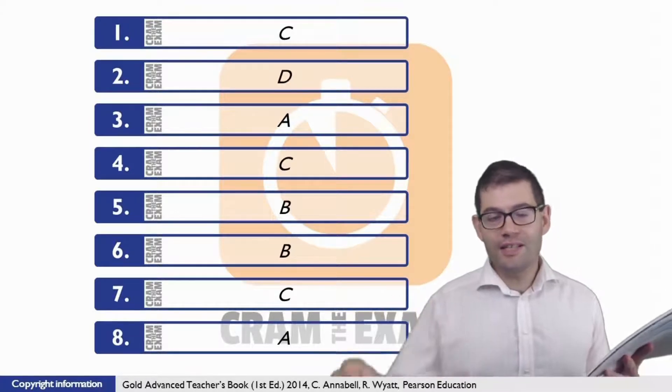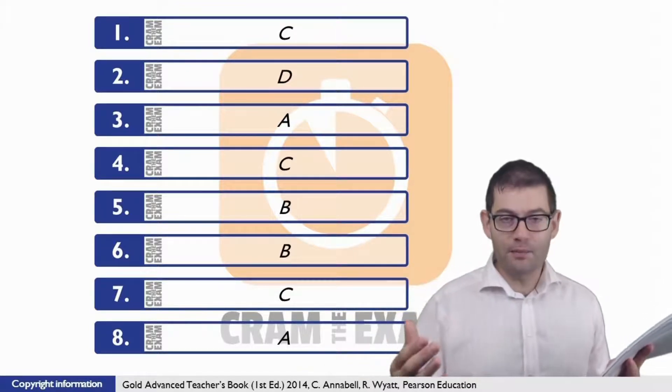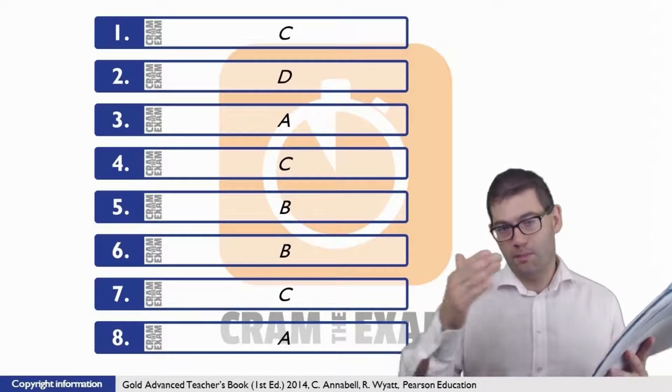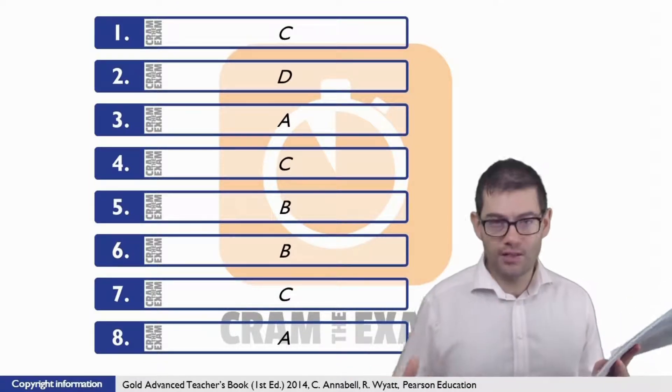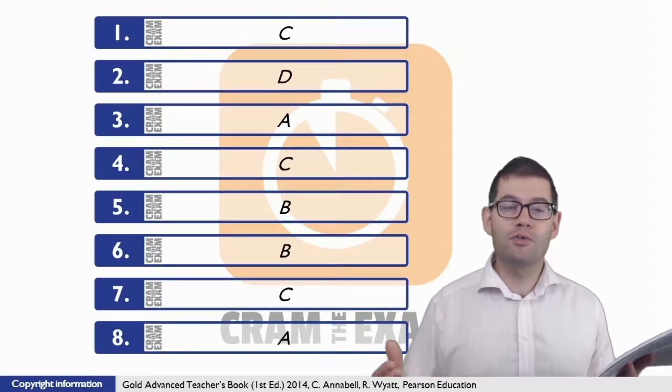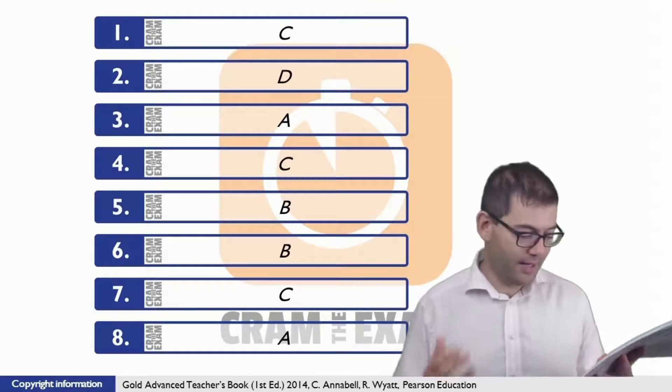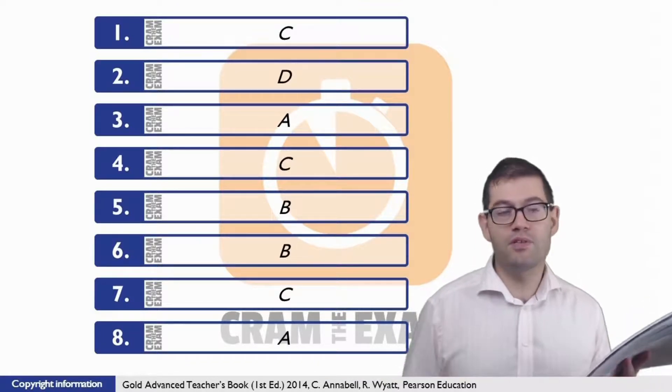Question number six: if you know the idiom which follows 'a house on fire,' then you would know that it basically means that they like each other a lot. So what phrasal verb do we need to express 'like each other'? Of course, you 'get on with' someone, and that's exactly why the answer is B in this case, and we need the preposition 'on.'